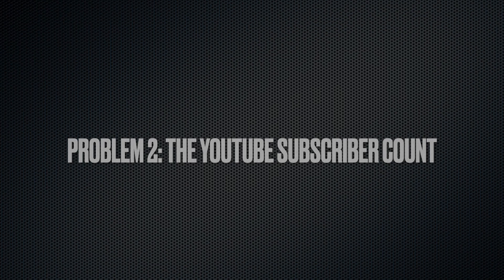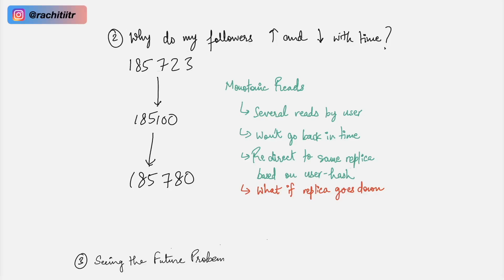So why do these number of followers are increasing and decreasing with time? Let's say on my YouTube channel I am having 185,723 subscribers, and then after an hour I see that it has dropped to 185,100. So this might give me very bad impression that I have done something terribly wrong and it has led to a decrement in my subscriber count. And 600 subscriber decrease in just one hour might give me a very bad impression that probably my video or last video was really bad. But after 30 minutes I am redirected to some fresh replica and my final subscriber count is 185,780.